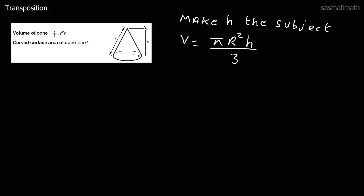We can do it all in one go. That 3 is dividing, and pi r squared is multiplying the h. So: 3V divided by pi r squared equals h.